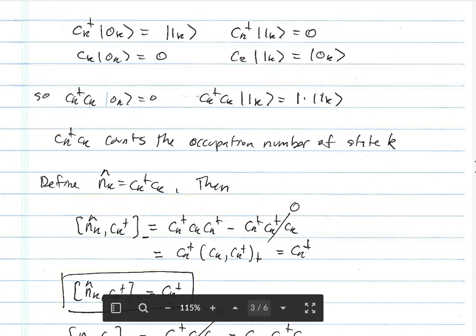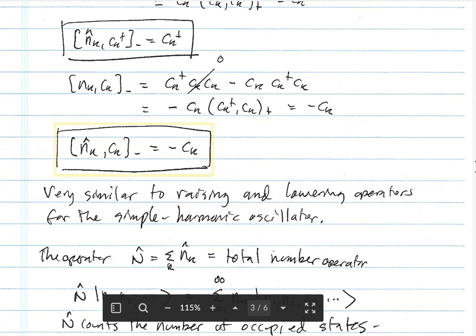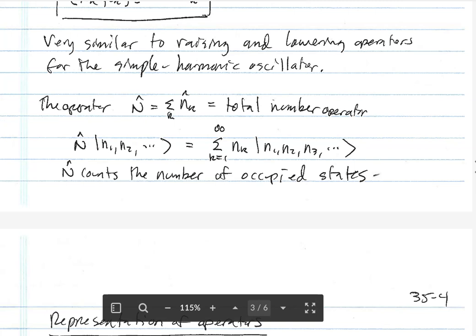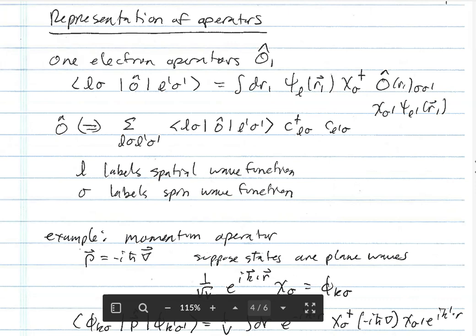We define n_k = c†_k c_k. The commutator [n_k, c†_k] can be written as c†_k c_k c†_k — because the term we subtract has c†_k squared — and that equals c†_k times the anticommutator {c_k, c†_k}, which gives c†_k. So [n_k, c†_k] = c†_k. Similarly, [n_k, c_k] = −c_k. This is very similar to the raising and lowering operators for the simple harmonic oscillator. Just like with photons, the total number operator is the sum over k of n_k, counting the total number of fermions in all occupied states.